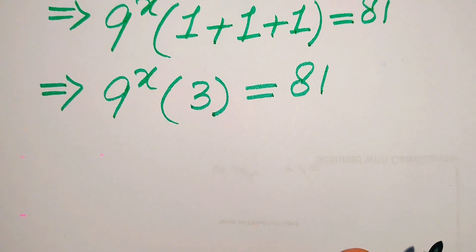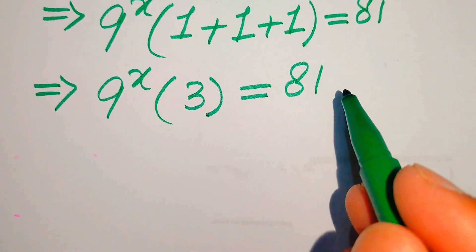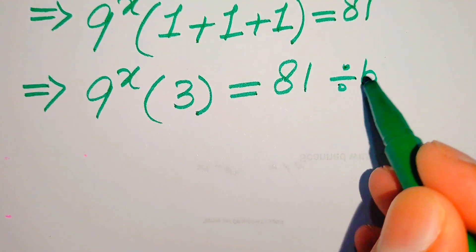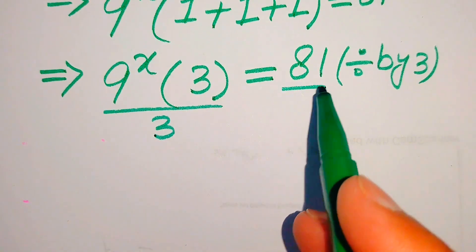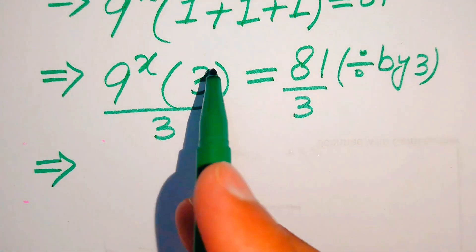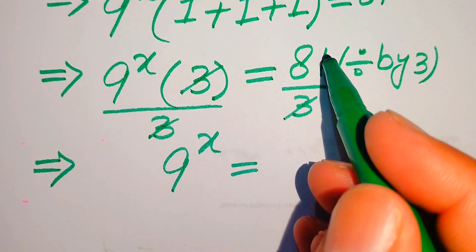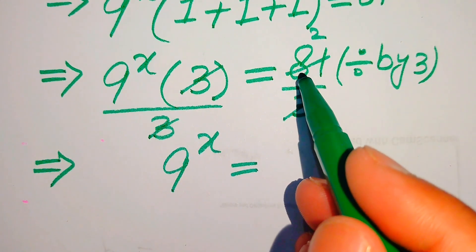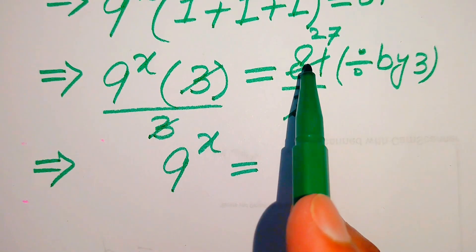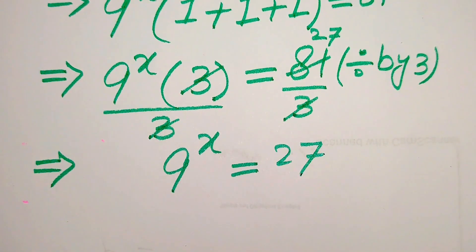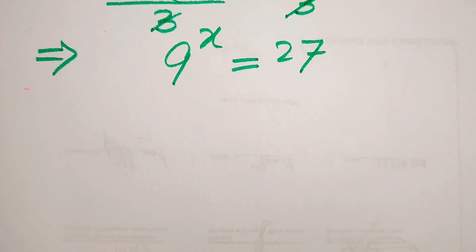In the next step we need to remove the 3 from the left hand side, so we divide both sides by 3. This 3 cancels out and we get 9 to the power of x equals 81 divided by 3, which gives us 27. So we have converted the equation into a single exponential form: 9 to the power of x equals 27.